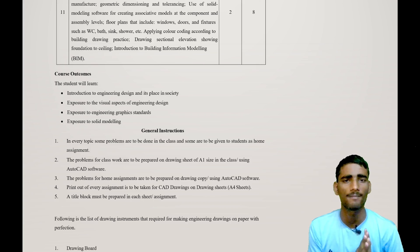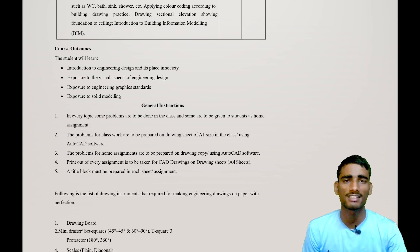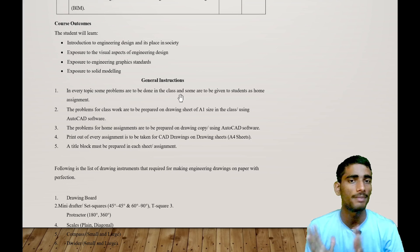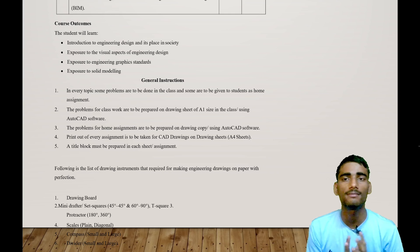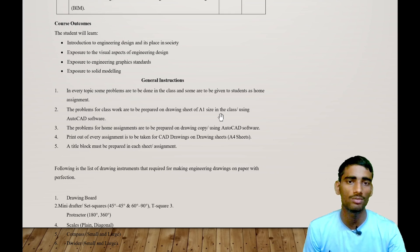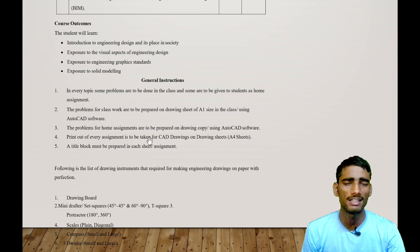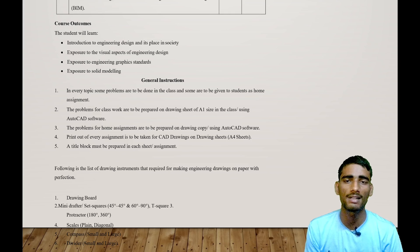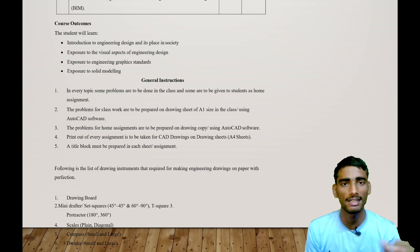Some general instructions to follow: in every topic, one or two problems will be allotted as assignments, to be done in the lab subject during two-hour sessions. Class work problems are to be prepared on A1-size drawing sheets in class using AutoCAD software. You design on the computer system and take a printout, but for manual graphics you perform on A1 sheets in class.